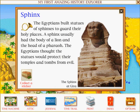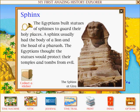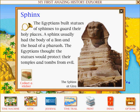Sphinx: The Egyptians built statues of sphinxes to guard their holy places. A sphinx usually had the body of a lion and the head of a pharaoh. The Egyptians thought the statues would protect their temples and tombs from evil.